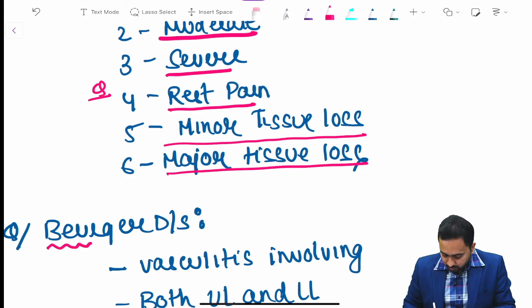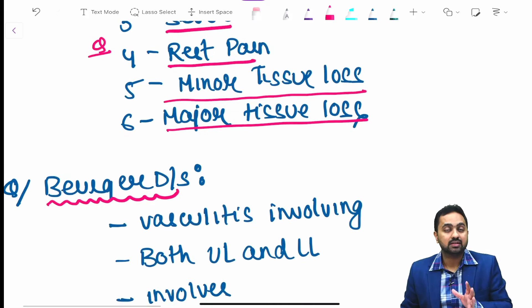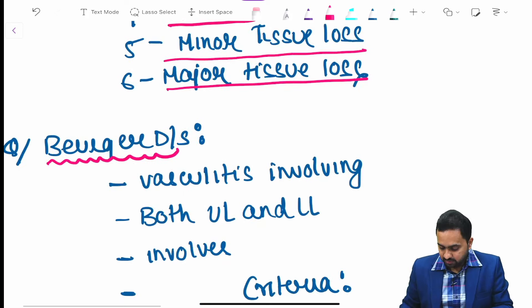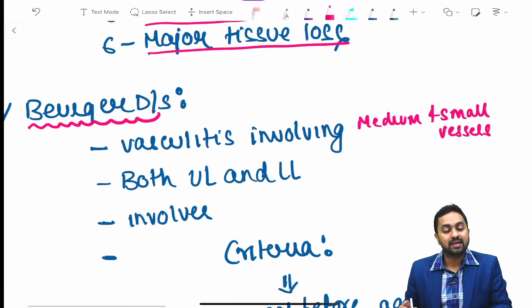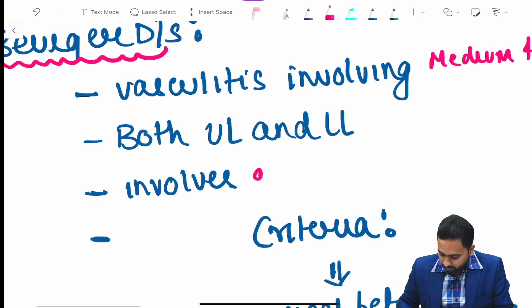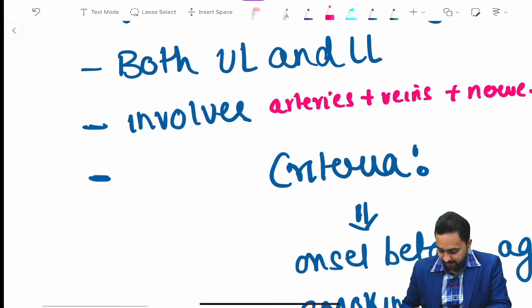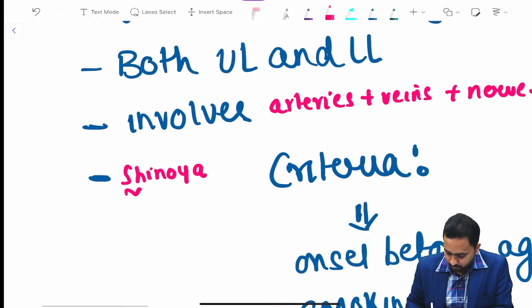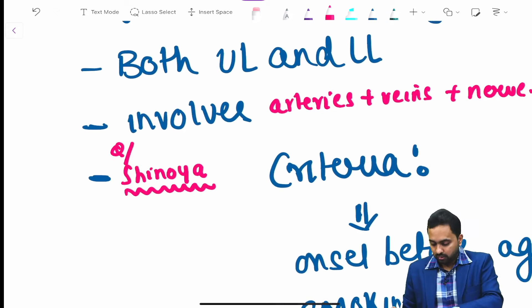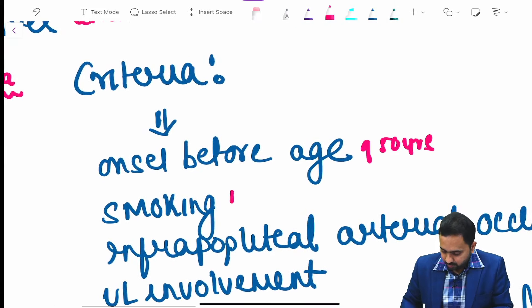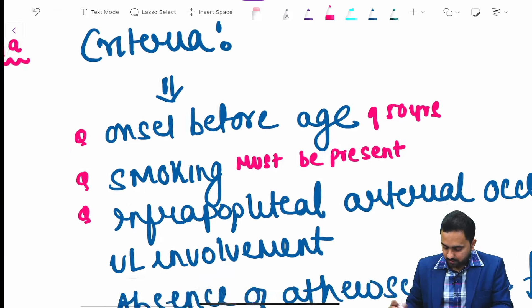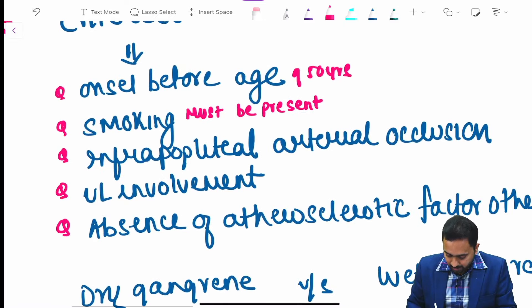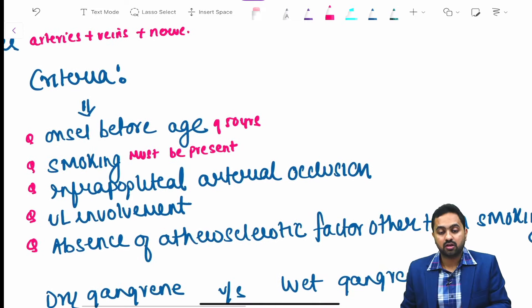This is a common exam question regarding Buerger disease. This is vasculitis involving medium and small vessels. It can involve both upper limb and lower limb. It involves arteries plus veins plus nerves. There is a criteria giving a clue to diagnosis of Buerger disease, the Shionoya criteria. Onset before age 50 years, smoking must be present, infrapopliteal arterial occlusion.